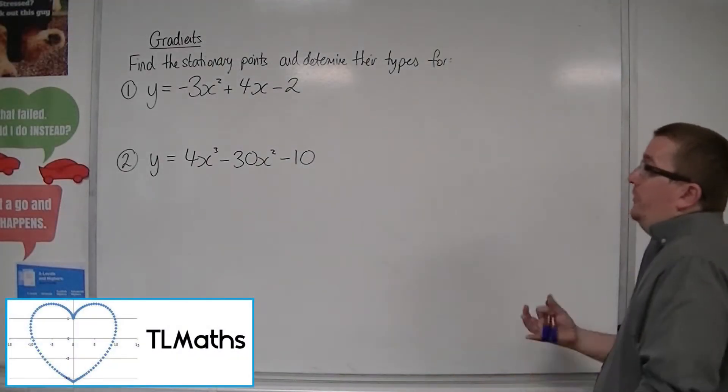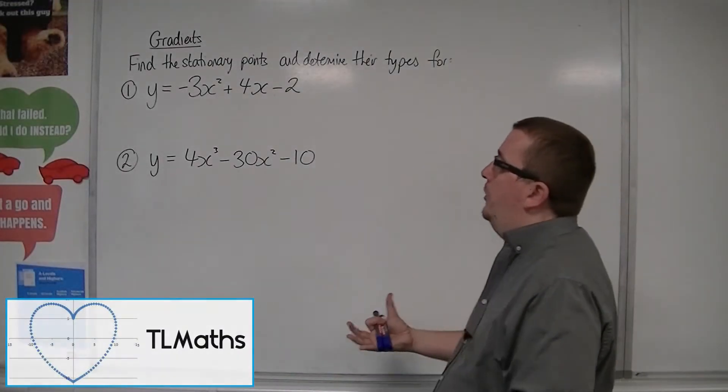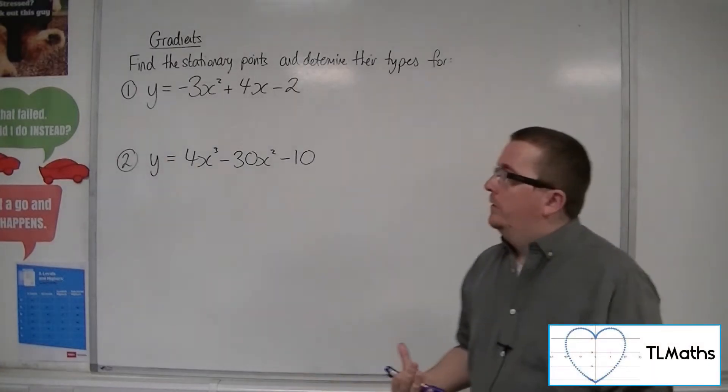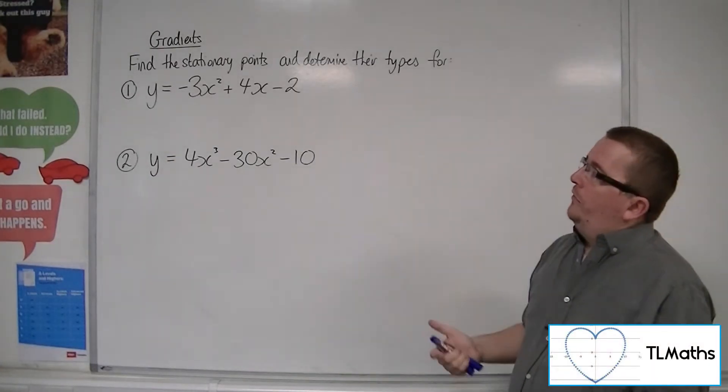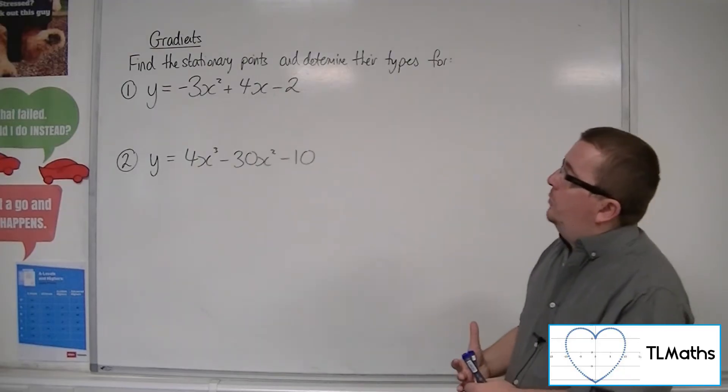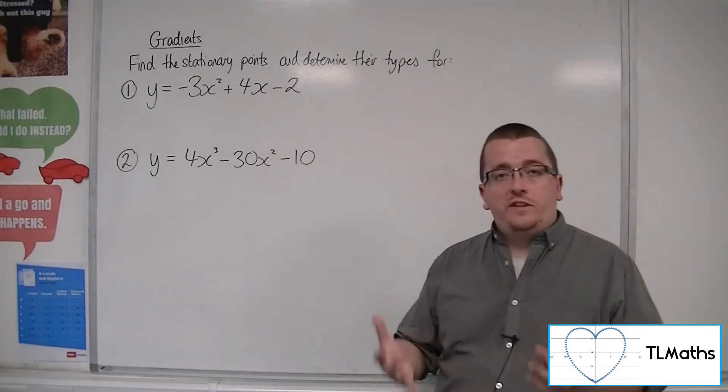Let's say I've been asked to find the stationary points and determine their types for these two functions. The first thing I want to do with number 1 here, y equals minus 3x squared plus 4x minus 2, is to differentiate it.